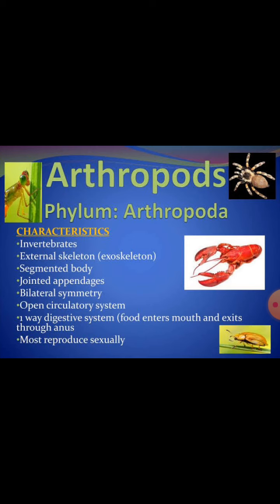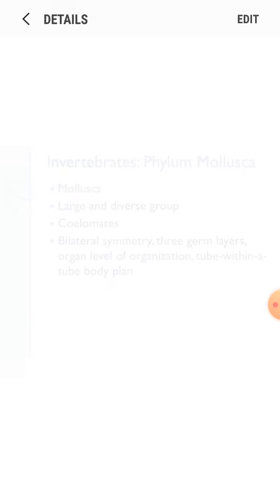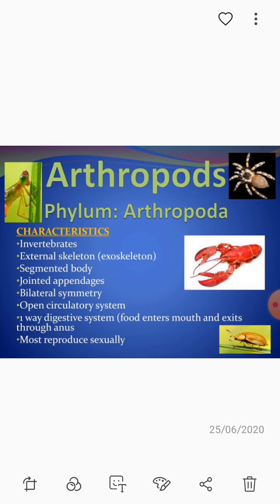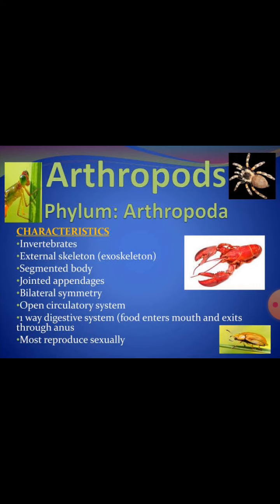The segmented body has jointed appendages and legs, with bilateral symmetry. There is an open circulatory system, meaning circulation does not take place through blood vessels. A well-developed digestive system and other systems are seen. Most arthropods reproduce sexually.